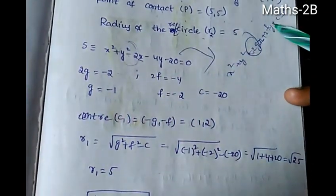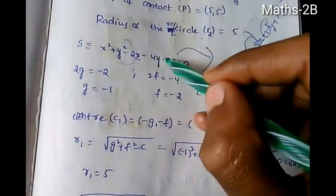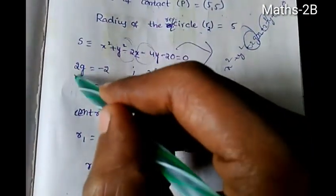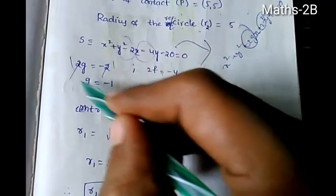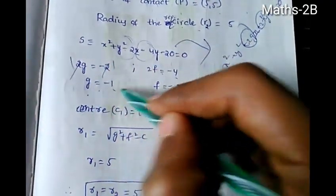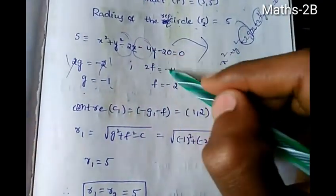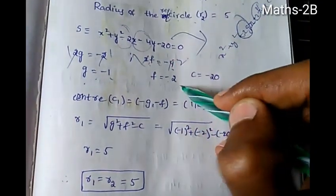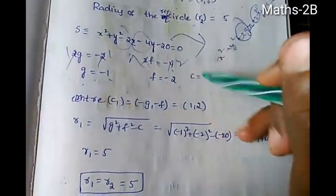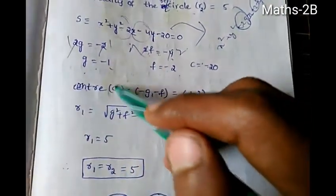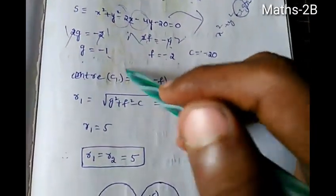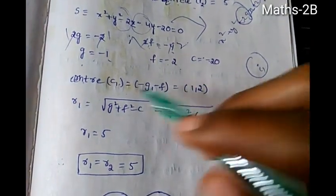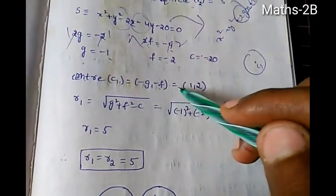We have 2f. And 2f equals -4. So g equals -1, then 2f equals -4, and c equals -20. So g = -1.